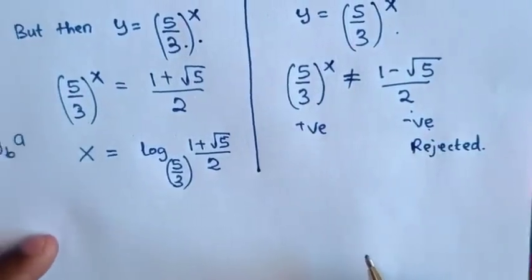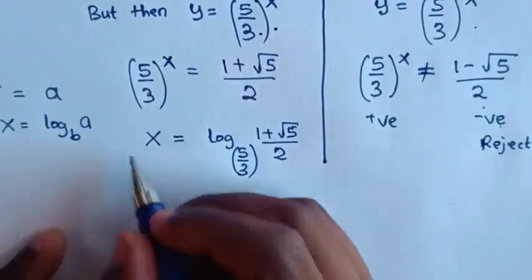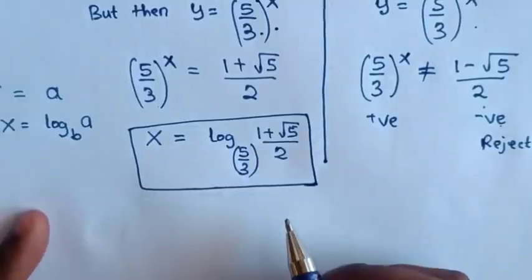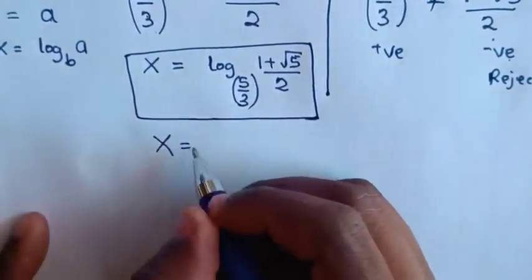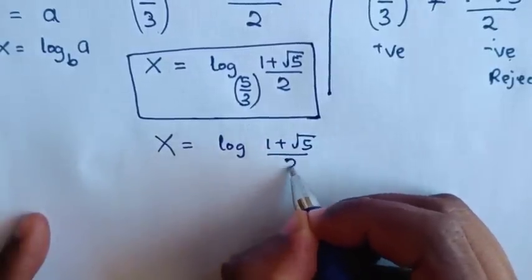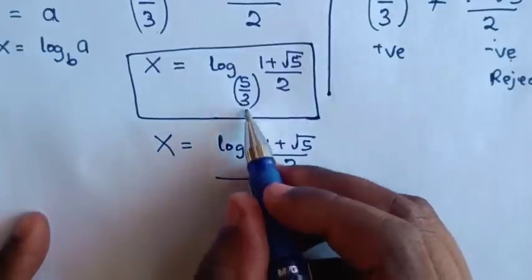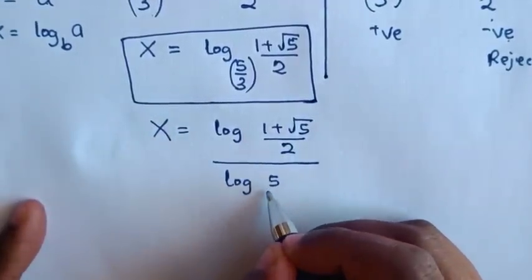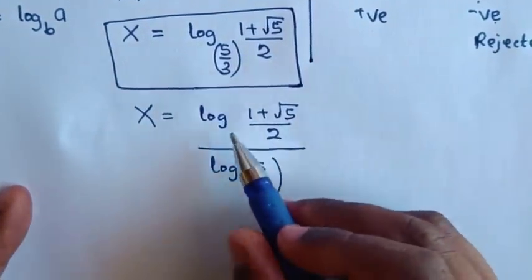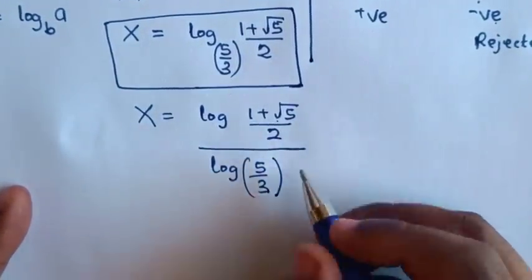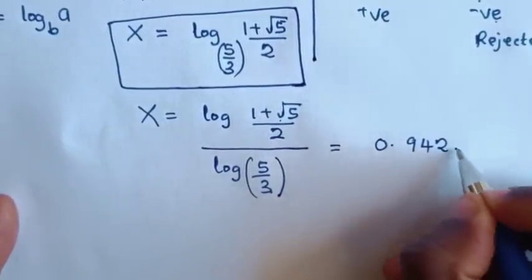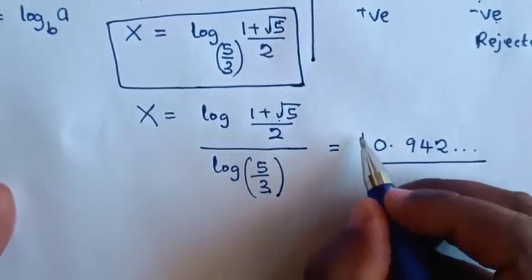Therefore the only value of x is x equals log of (1 plus square root of 5) over 2, base (5/3). Or using a calculator, this equals log((1 plus square root of 5)/2) over log(5/3), which gives approximately x equals 0.942 repeating decimal.